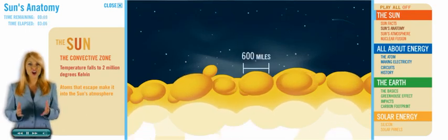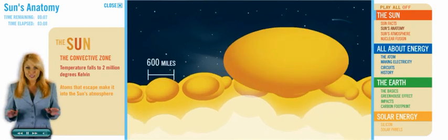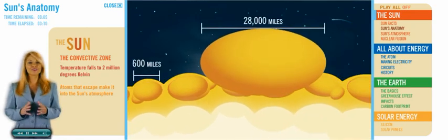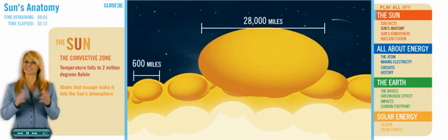Supergranules are even larger, about 28,000 miles across. Those atoms that escape make it into the Sun's atmosphere.